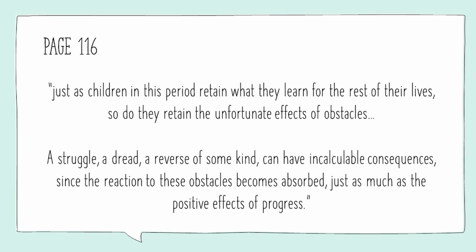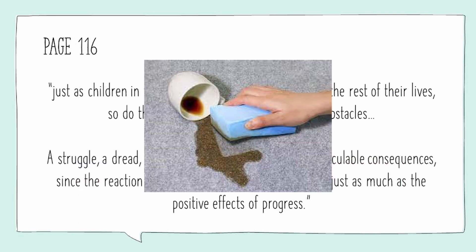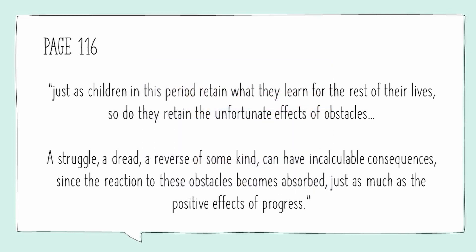When we see the child going through this difficulty and having trouble adapting to the world, we have to keep in mind that the child's mind is absorbent — it's like a sponge. If you put the sponge in clean water it absorbs clean water, but if you put it in dirty water, it can't discriminate. It's going to absorb everything it comes in contact with. The child's mind between the ages of zero and six can't discriminate what it absorbs. So whatever the child is struggling with, whatever they're dreading, it is going to be absorbed and they're going to carry it with them, whether consciously or unconsciously.